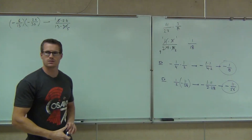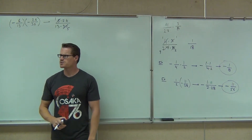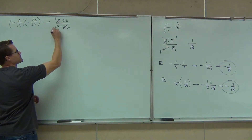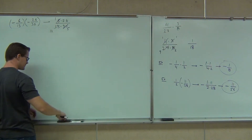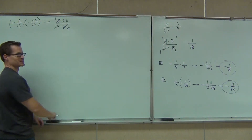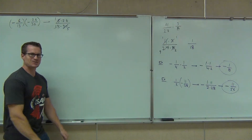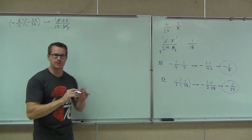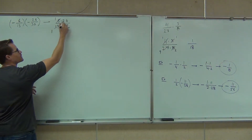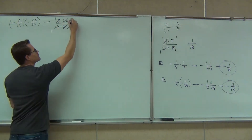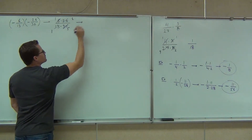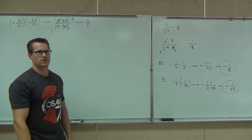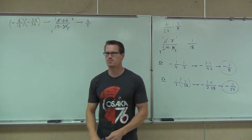Do you see anything else? 13 and 26 — what divides both 13 and 26? 13. So we'll divide 13 by 13, which is 1. And 26 divided by 13 is 2. We're dividing by the number that they share in common. This is much quicker than multiplying those things and then simplifying — much, much quicker.